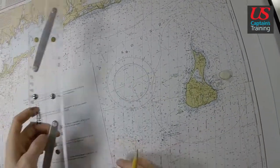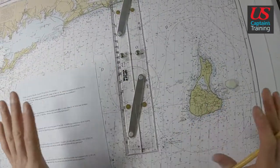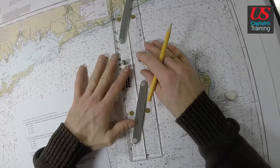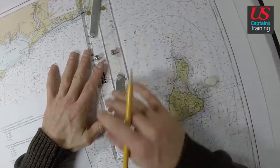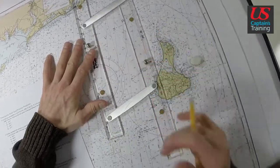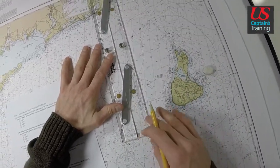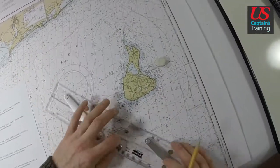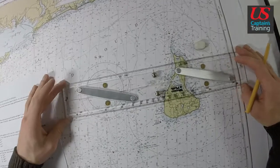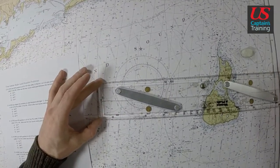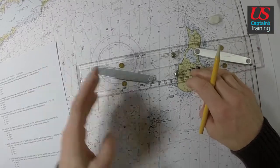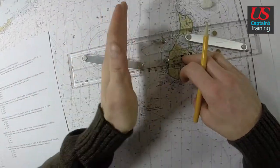You'll notice one of the hardest parts about this first problem set is using your parallel rules and dividers. So if we get down here too far, sometimes it's hard to use the parallel rules for both latitude and longitude. So I'll show you some tricks. Now I'm going to line these parallel rules up with a parallel.